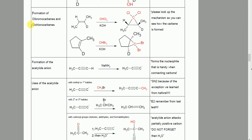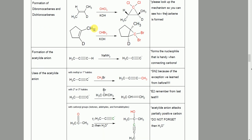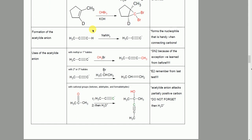Moving on to more cyclopropane-like structures — the formation of dibromocarbenes and dichlorocarbenes. Another set of reactions where we form little triangle structures. You take a carbon and two halides — CCl2 or CBr2 — attach the carbon, and the two halides come off. This is done with KOH. You don't really need to know the mechanism — it will never be very relevant later, though it's interesting if you look it up.